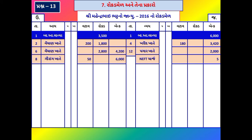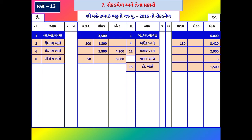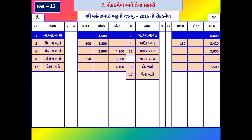સ્ટેશનરી ખર્ચ ચૂકવ્યા - આ રકમ બેંકના ખાનામાં નોંધવામાં આવે. તારીખ 17 નો વ્યવાર: રૂ. 4,100 બેંકમાં ભર્યા. અહીં બેંકમાં રકમ આવે છે, જ્યારે રોકડ (નાણા) માંથી જાય છે. બંને ખાતામાં નોંધ: ઉધાર બાજુ, તારીખ 17, વિગત - રોકડ ખાતે; બેંક ખાનામાં રૂ. 4,100 નોંધવામાં આવે.